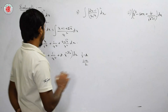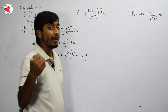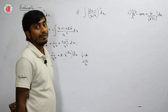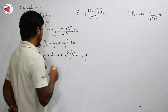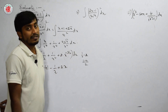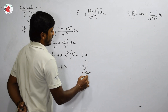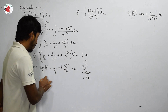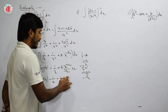Integrating each term: ∫x dx = x²/2; ∫(1/x²) dx = -1/x; ∫(2/√x) dx = 2 · x^(-1/2+1)/(-1/2+1) = 4√x. The power on the x^(-3/2) term: -3/2 + 1 = -1/2. So the answer is log|x| - 1/x - 4/√x + c.